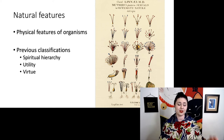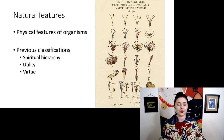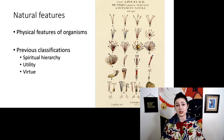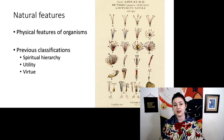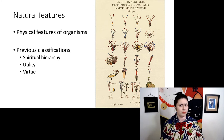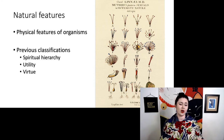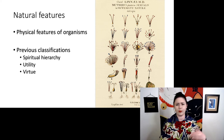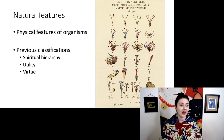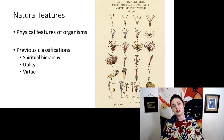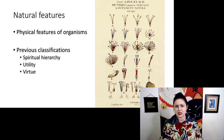This is different because previous classifications used very different ways to classify. It could be a spiritual hierarchy — the Scala Naturae we talked about, how things are closer to God or farther away. It could also be utility: are they medicinal plants, flowering plants, or poisonous? Or it could also be virtue: are they good or bad? Good things are probably medicinal stuff, pets, things that are cute, livestock. Bad things are weeds or poison — probably also mosquitoes.